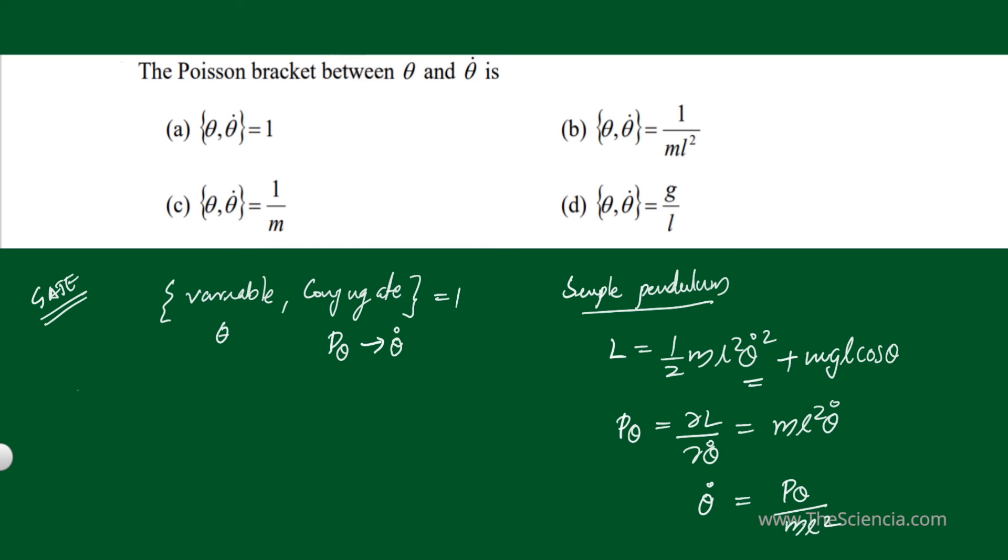Now I'm rewriting this equation. The Poisson bracket {theta, theta dot} equals {theta, P theta / M L squared}.